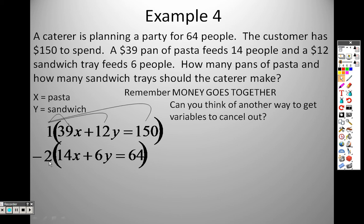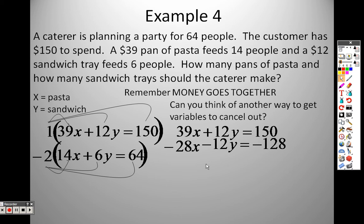1 times all of that just gives me what it was. Negative 2 times 14 is negative 28. Negative 2 times 6 is negative 12. Negative 2 times 64 is negative 128. This way, the 12s cancel out. 39 plus negative 28 is 11x. And that gives me 22. So I find out now that x equals, when I divide both sides by 11, I get x equals 2 as my answer.